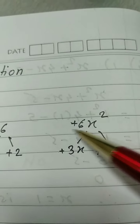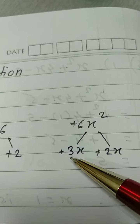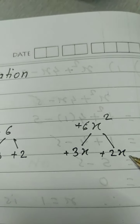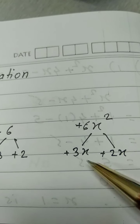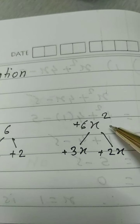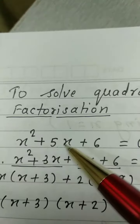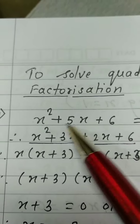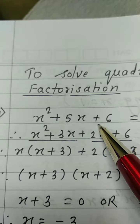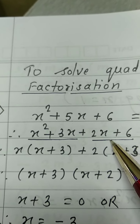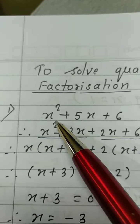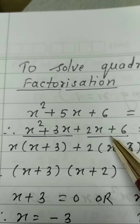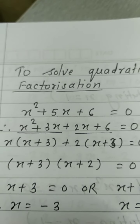In short, by factorizing 6x², it will be 3x and 2x, because 3 × 2 = 6. So we have to split up the middle term into 3 and 2, meaning 5x will be converted into 3x + 2x. So the next step is: x² + 3x + 2x + 6 = 0.